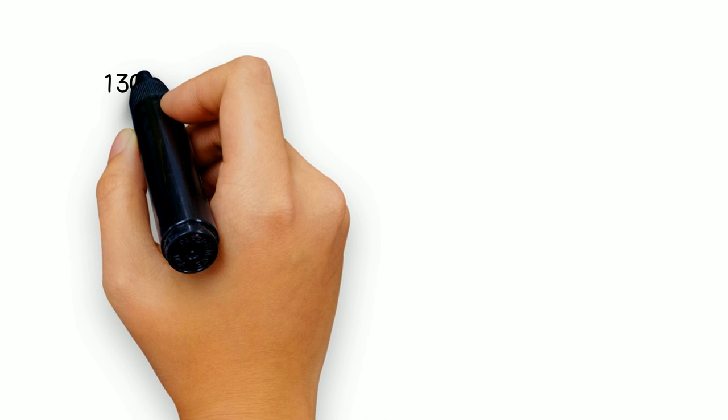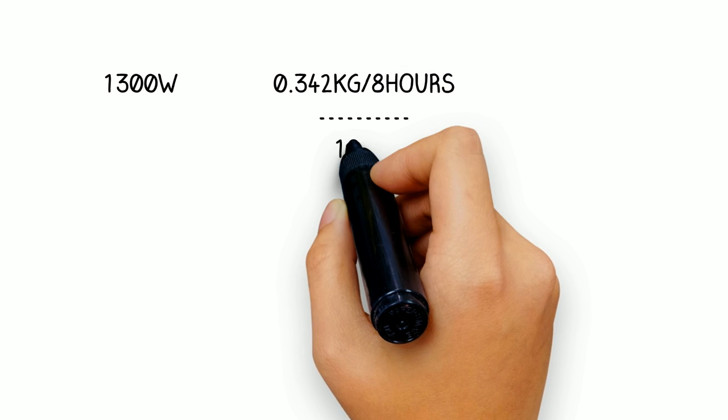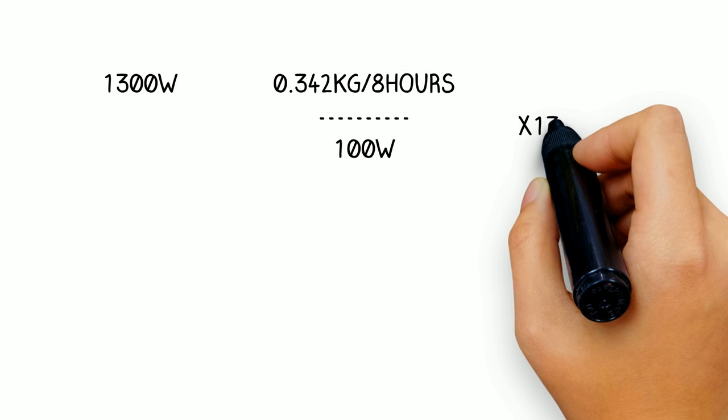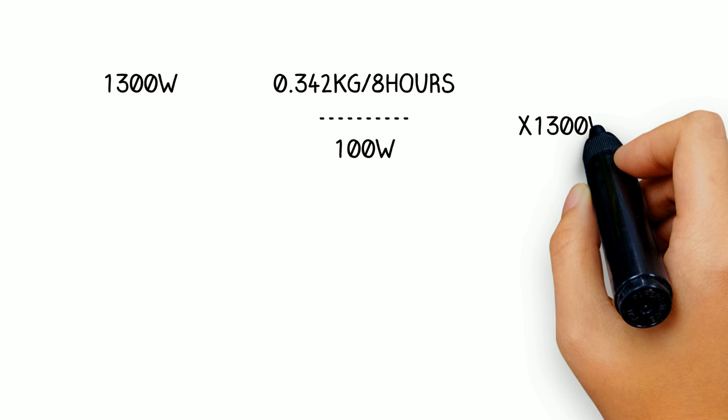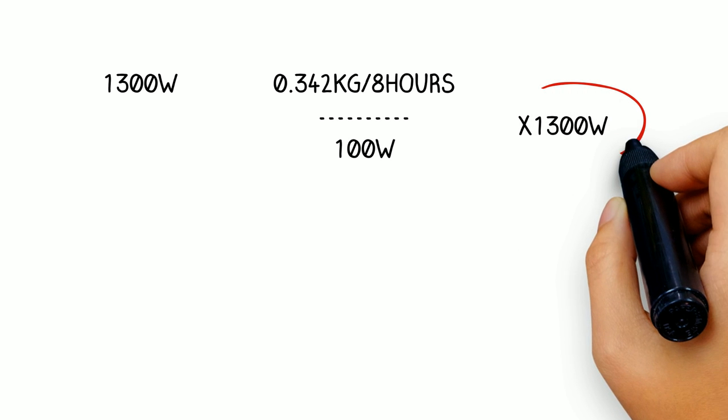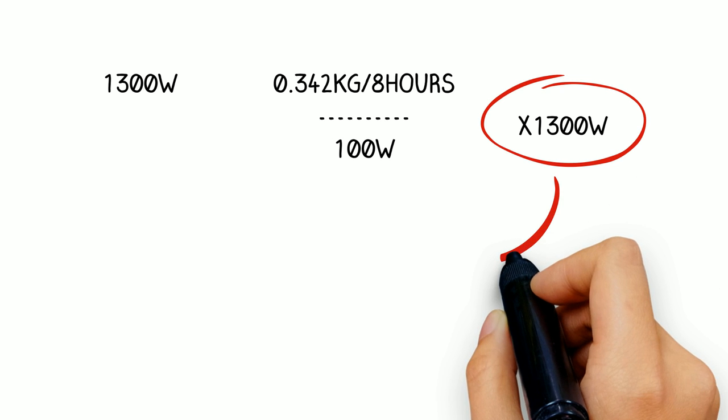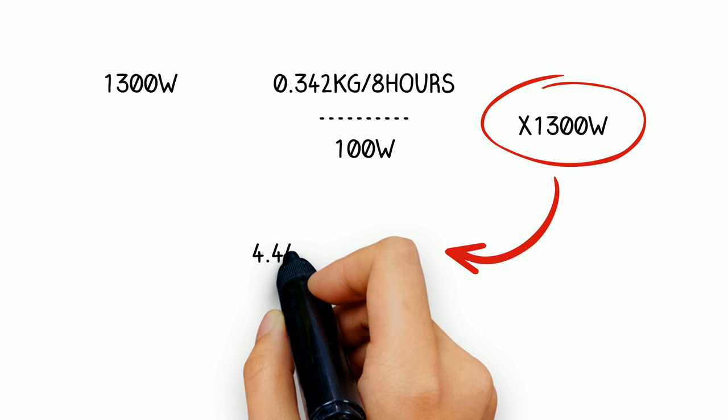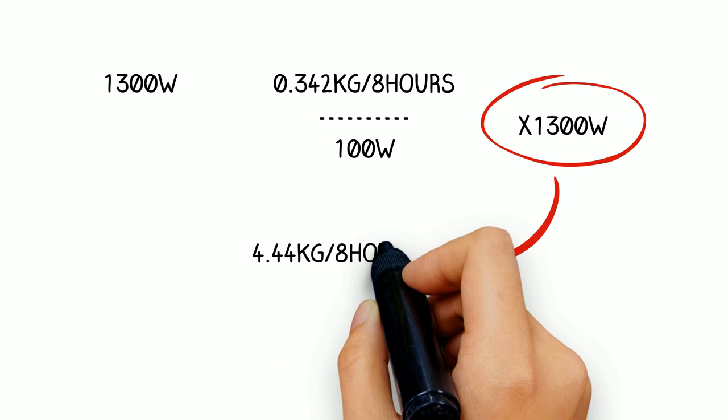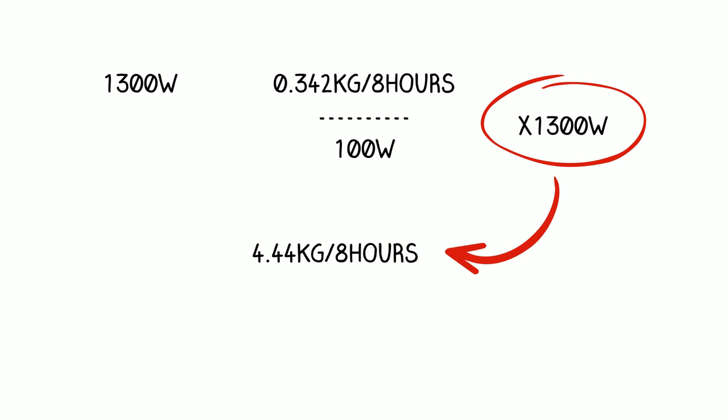So let's take a look at our older type calorimeter which typically is 1300 watts. So we do the same calculation again. 0.342 kilograms for eight hours divided by the 100-watt load times 1300 watts. And the answer is 4.4 kilograms for eight hours of coal used to burn that load.